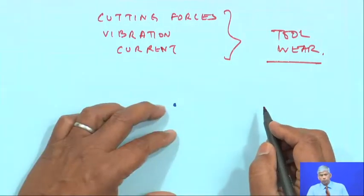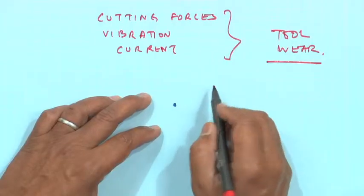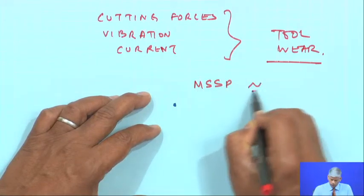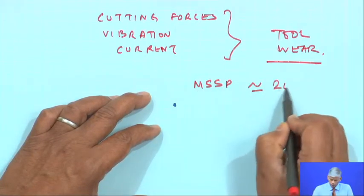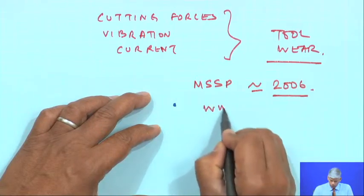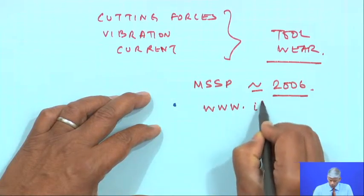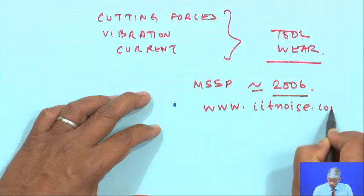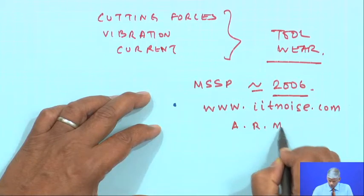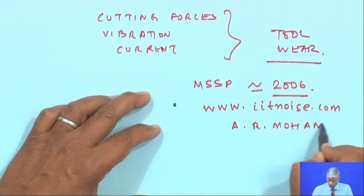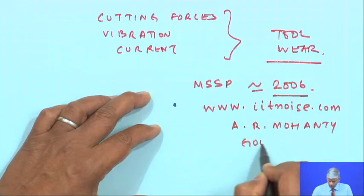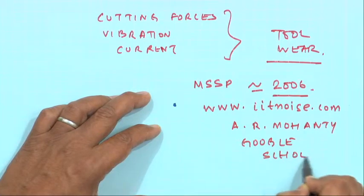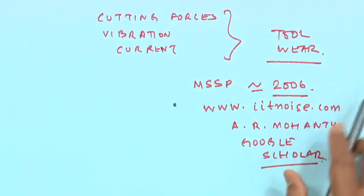This work is published in Mechanical Systems and Signal Processing, somewhere around 2006. You can refer to my website or my Google Scholar — search A.R. Mohanty — to get the reference to this paper. Those who want to download it can do so or ask me for a complimentary copy.